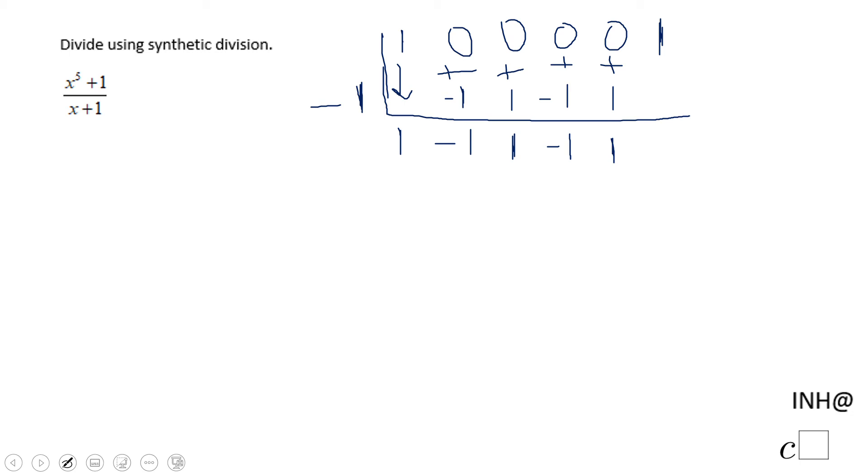And negative one times one is negative one. And we get this zero, which is the remainder. So what do we have here? What is the meaning of all these numbers?